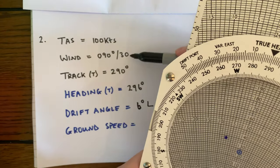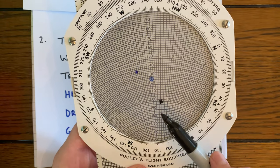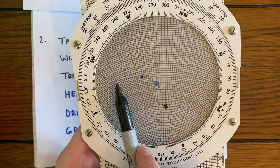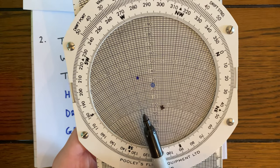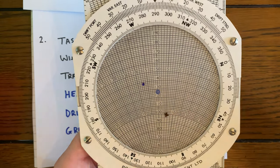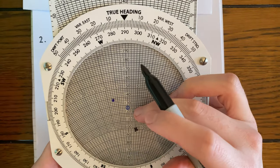So remember, the wind is coming from 090, which is over here. The wind is looking to blow us off track to the left, so our drift angle is going to be to the left. And we've corrected six degrees to the right to compensate for that.